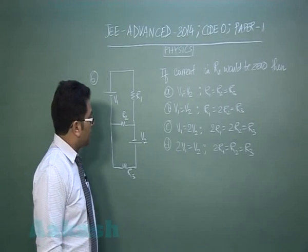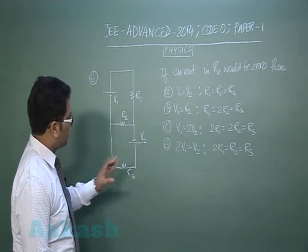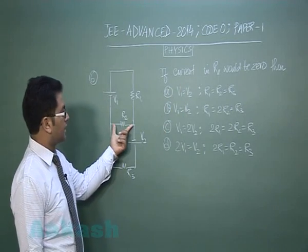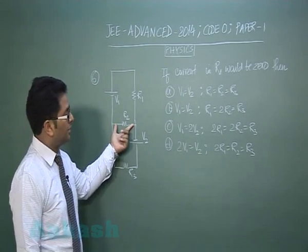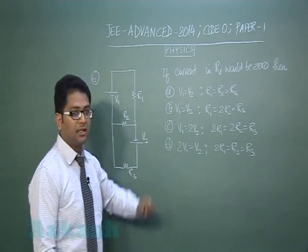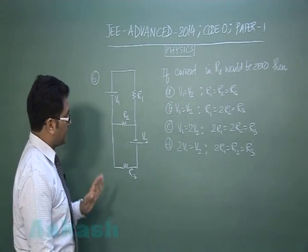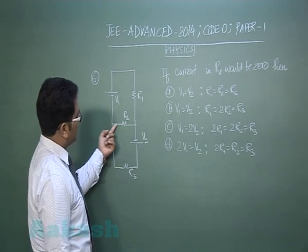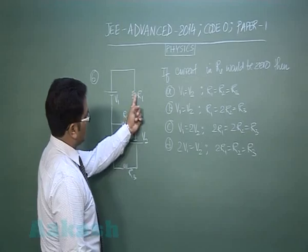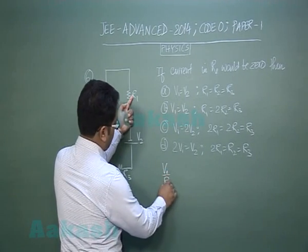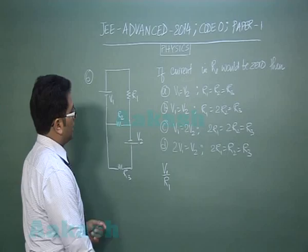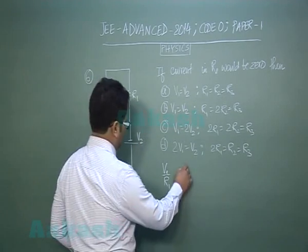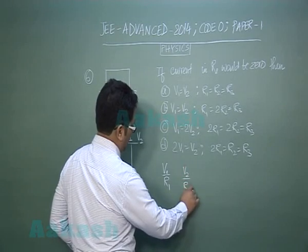Question number six is from current electricity and quite tricky. If current in R2 would be 0, that means current through this resistor is 0, and we got to see the possible option. Now let us hit it in a single blow. If current is 0, this PD would be 0, then current through this would be V1 by R1. Similarly, if this current is 0, PD across R3 would be V2, and that would be V2 by R3.